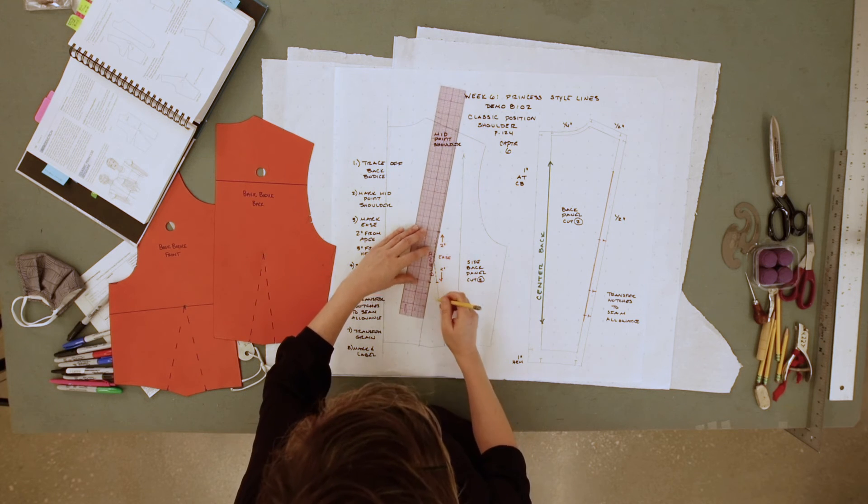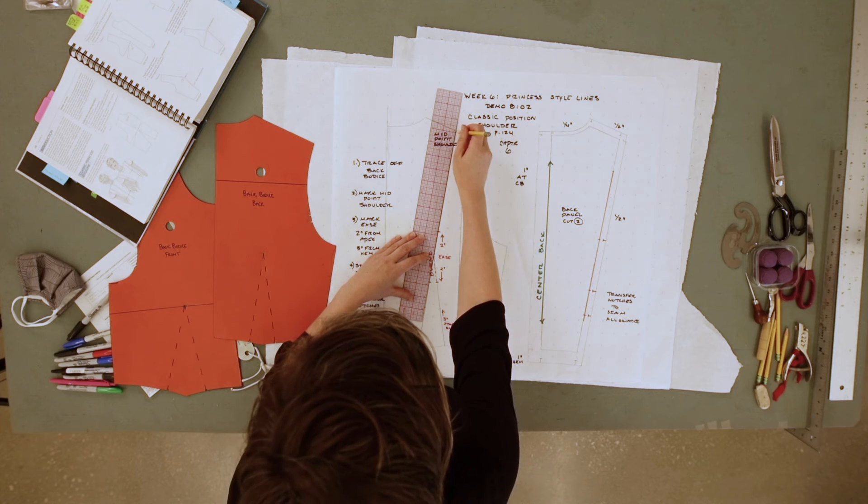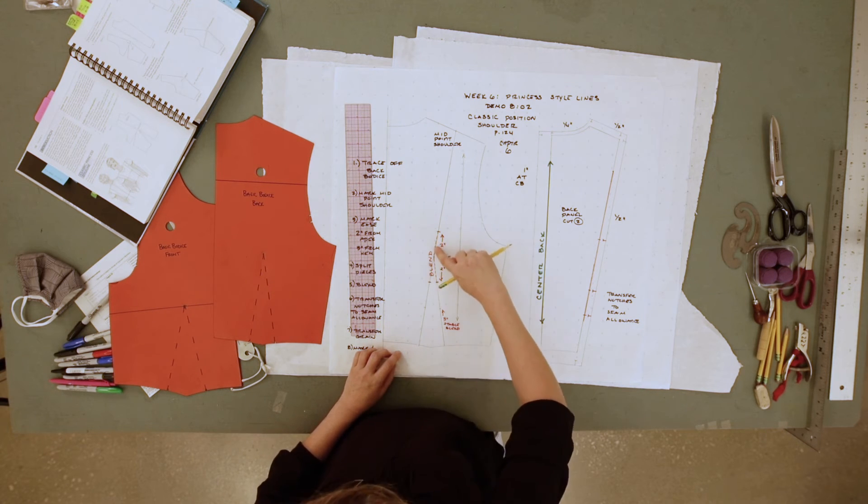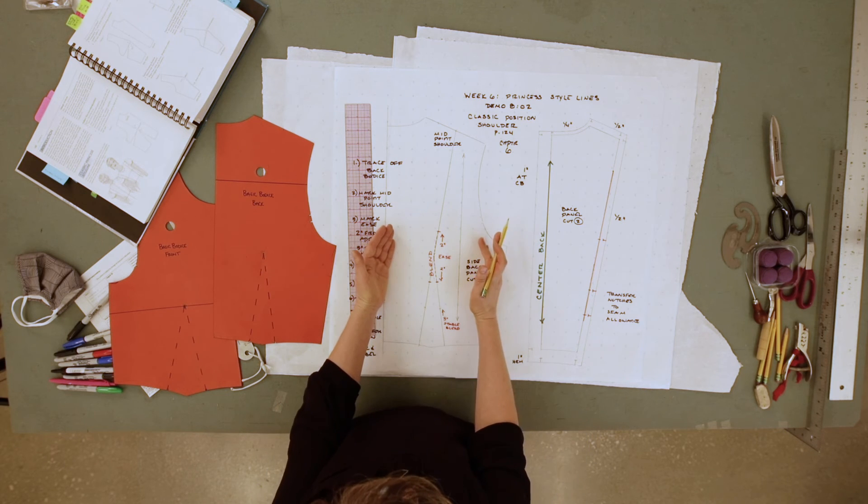Now when we go to draft our style line off of this dart leg, we know that we will need to also blend that panel, just like we did to the front when we split these off.